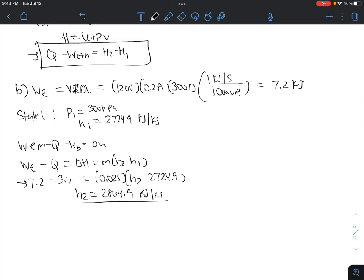Now our final state is specified since we know the enthalpy and the pressure. So we have our H2 and we know P2 is 300 kPa. So from our table, we find T2 is equal to 200 degrees Celsius.